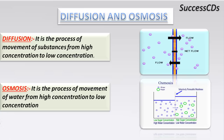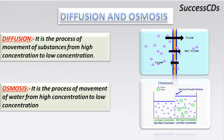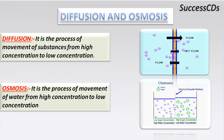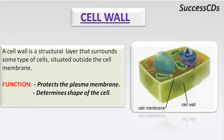Osmosis, on the other hand, is the movement of water from high concentration to low concentration, as shown in the diagrams. The next component is the cell wall, a structural layer that surrounds some types of cells. Plant cells have both a cell wall and a cell membrane, while animal cells have only a cell membrane. The cell wall protects the plasma membrane and determines the shape of the cell.